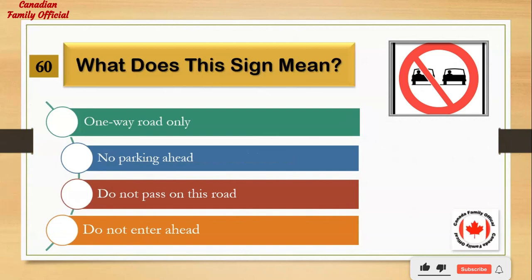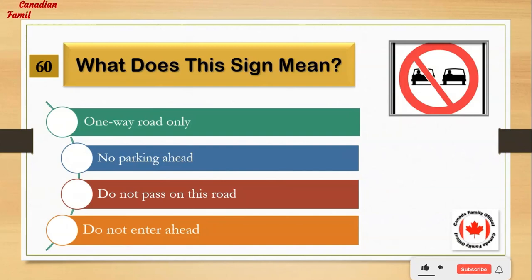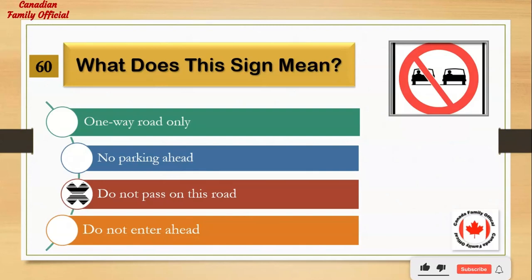What does this sign mean? Number 1: one way road only. Number 2: no parking ahead. Number 3: do not pass on this road. Number 4: do not enter ahead. And the answer is: do not pass on this road.